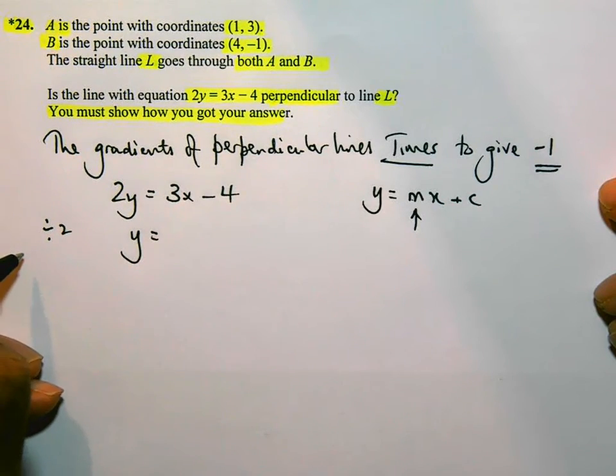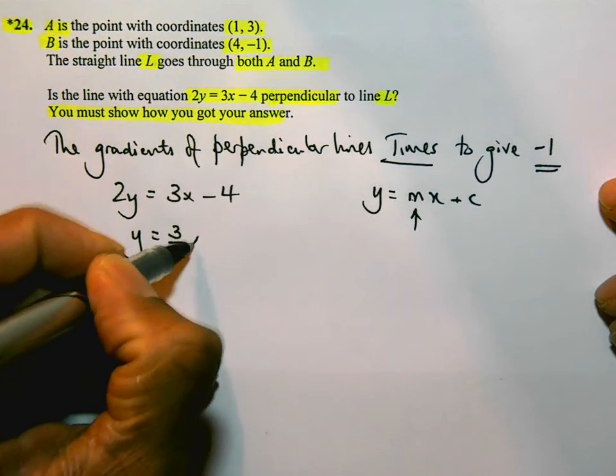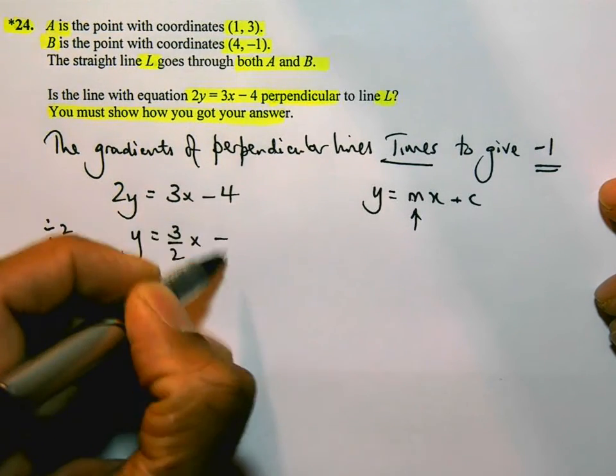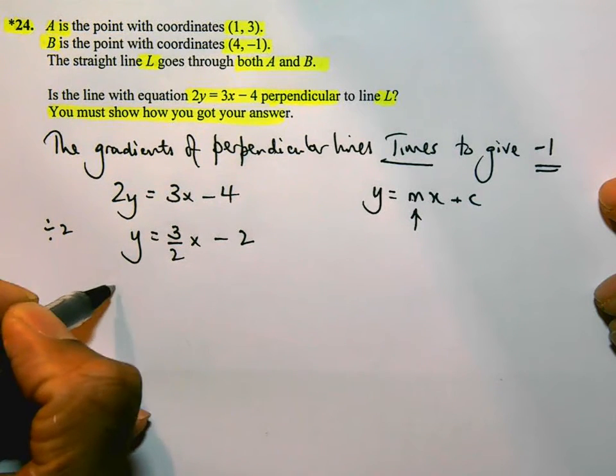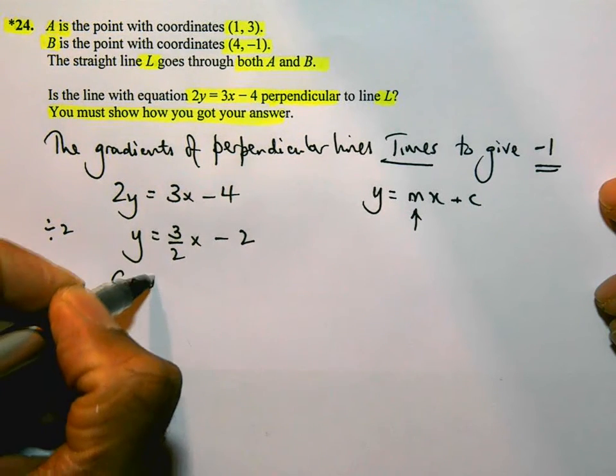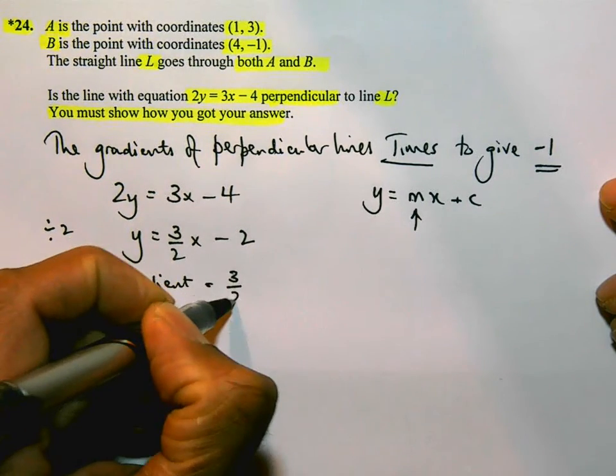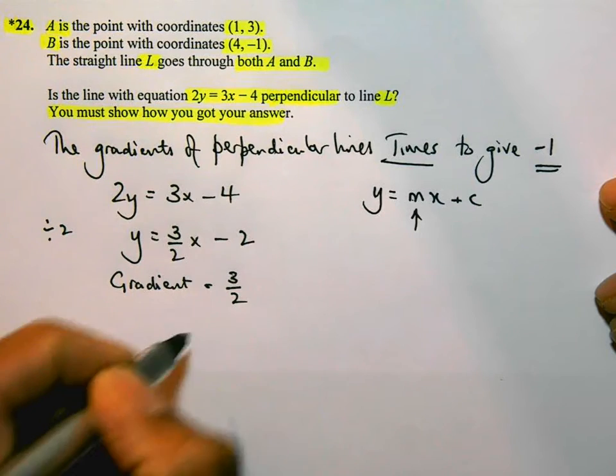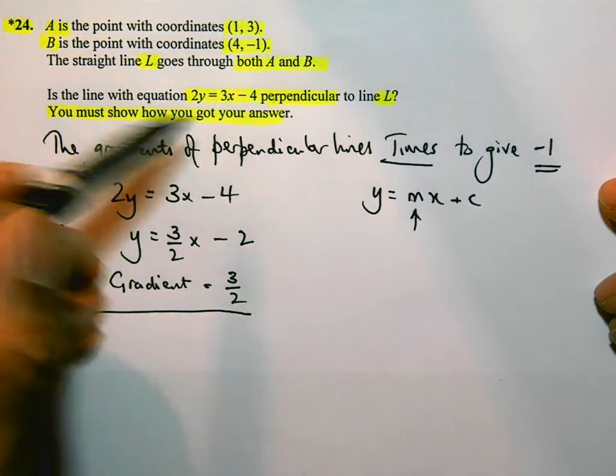If I divide that by 2, I'll get 3/2 x minus, and if I divide that by 2, I'll just get 2. So that means that this line here, its gradient is 3/2. Okay? So that's the first bit that I've worked out. I've worked out the gradient of this particular line, 2y = 3x - 4.